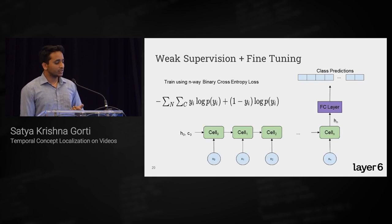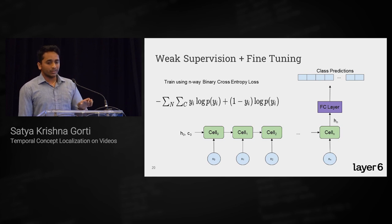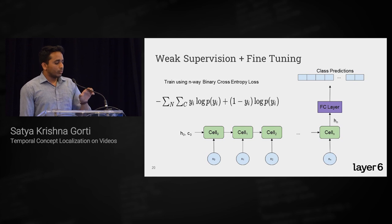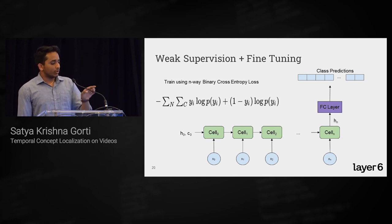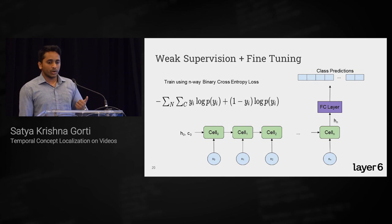The solution is weak supervision and fine-tuning. We first train a network on video-level auxiliary labels — that's the weak supervision — and then fine-tune on the small subset with segment-level labels. For the LSTM, we copy its parameters and the classification layer to predict for each segment, then fine-tune on the labeled subset.